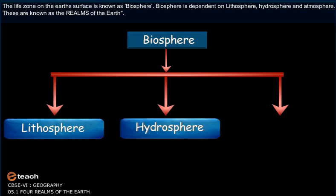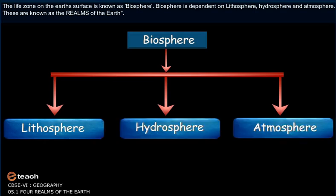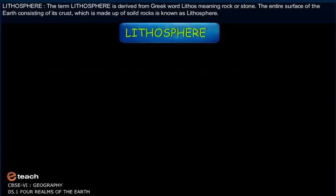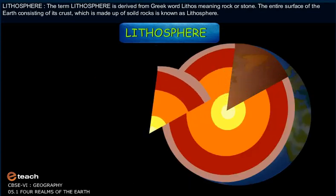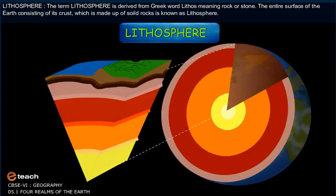These are known as the realms of the Earth. The term Lithosphere is derived from the Greek word 'lithos', meaning rock or stone. The entire surface of the Earth, consisting of its crust, which is made up of solid rocks, is known as Lithosphere.